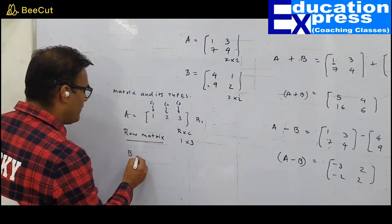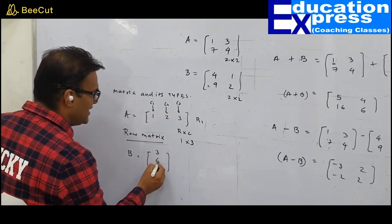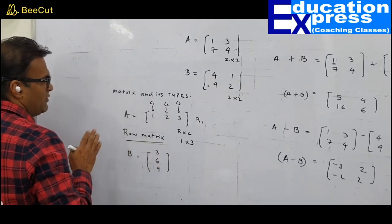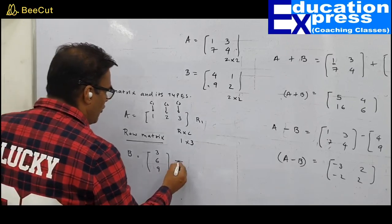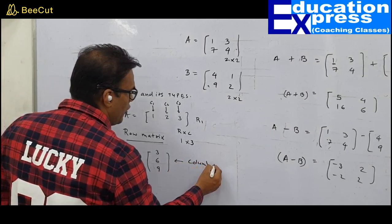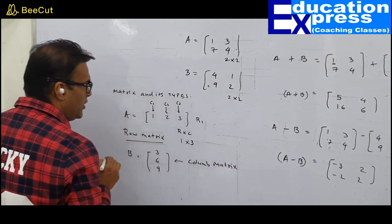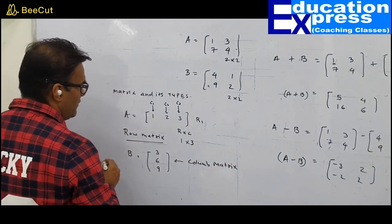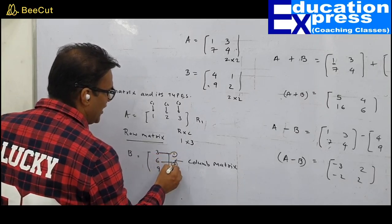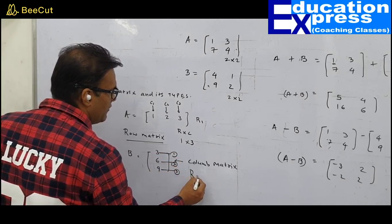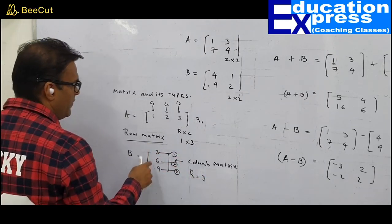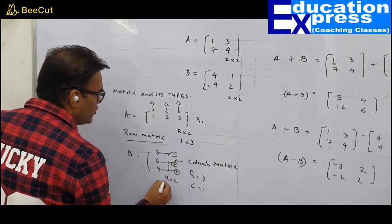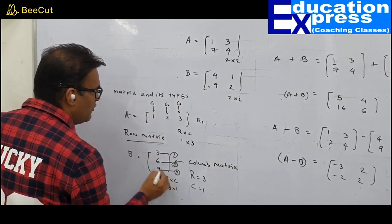Next, consider the matrix with elements 3, 6, 9 arranged vertically. This is called a column matrix — one single column is clearly visible. It has 3 rows and 1 column, so its order is 3×1.